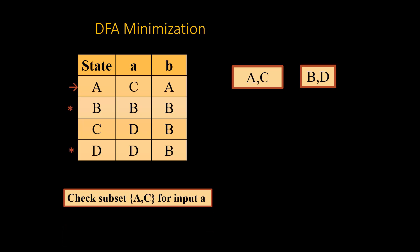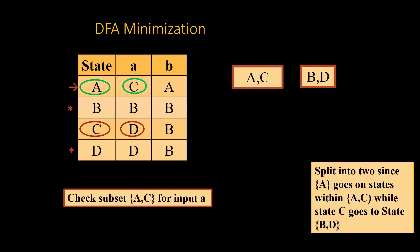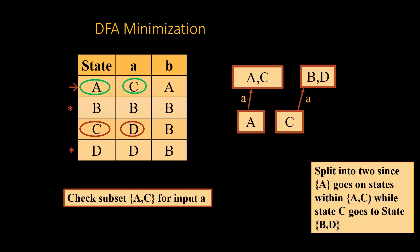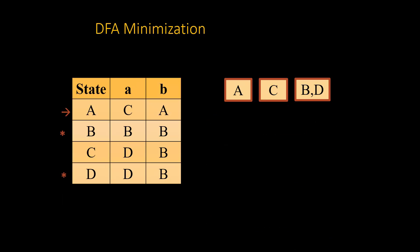We check {A, C} on input A. On state A it moves to C, which is within this set, but on state C it moves to the set of final states. Since the destinations differ, we split these two states, giving us three sets.